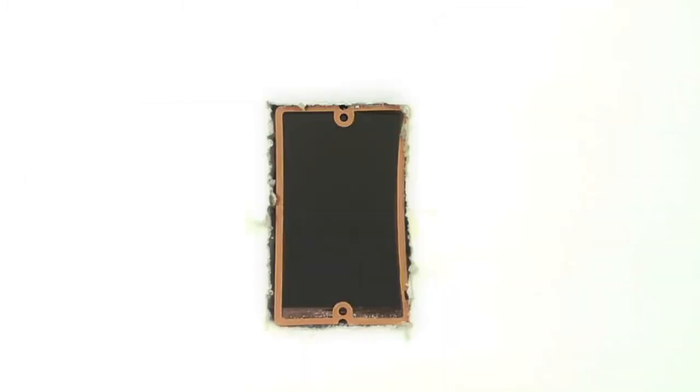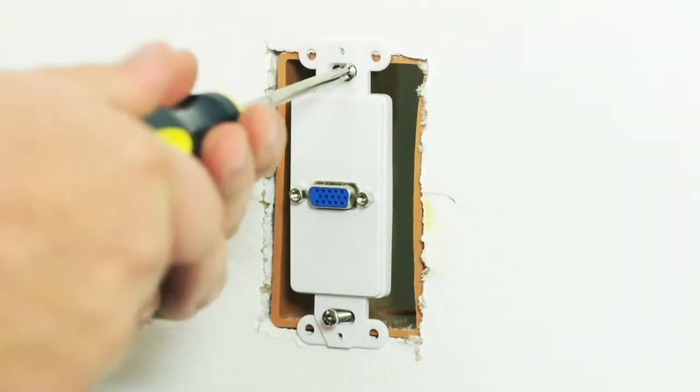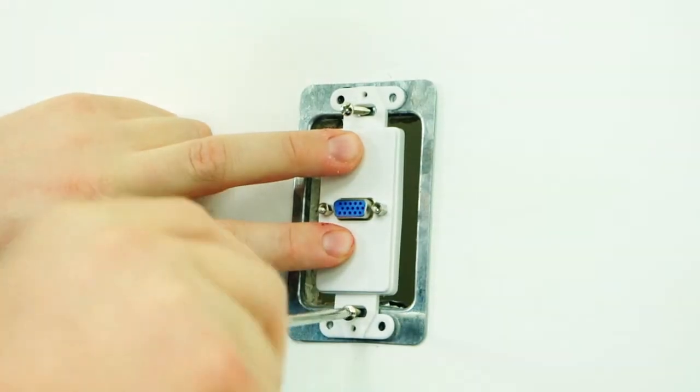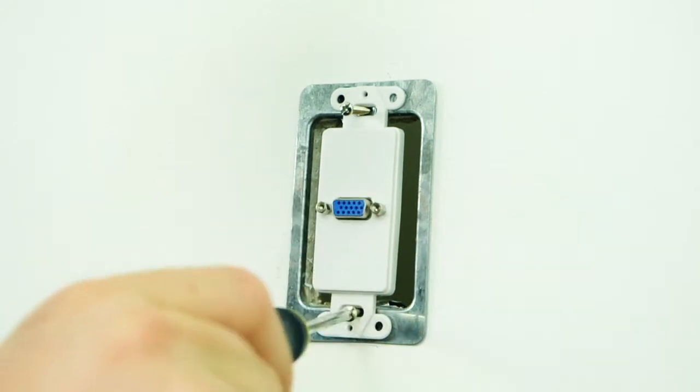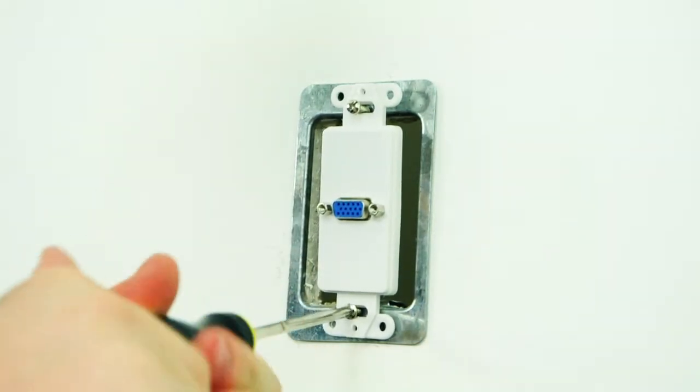This wall plate fits into a standard single-gain box for easy installation. The wall plate can also be installed using a mounting plate which eliminates the need for a box.